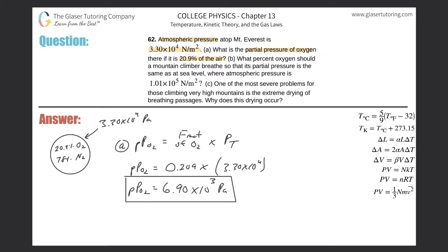Part B: what percent oxygen should a mountain climber breathe so that its partial pressure is the same as at sea level, where atmospheric pressure is 1.01 times 10 to the 5th newtons per meter squared? First, we need to find the partial pressure of oxygen at sea level.